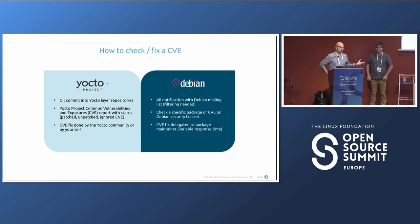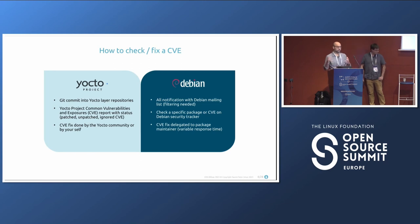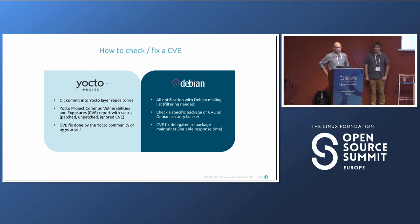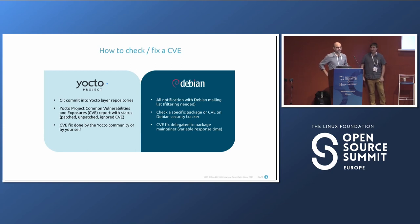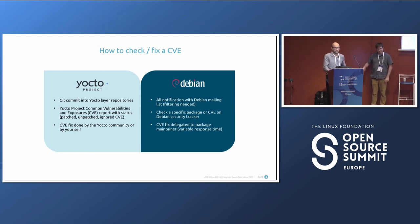Fixing a CVE can be done by the community or by yourself because you're dealing with source code — you can take an upstream patch and apply it. The Debian approach is totally different: you check CVE notifications via mailing lists, which is a manual operation. There's no automatic way to get all CVEs, and you have a larger amount to deal with, which is quite painful to be honest.